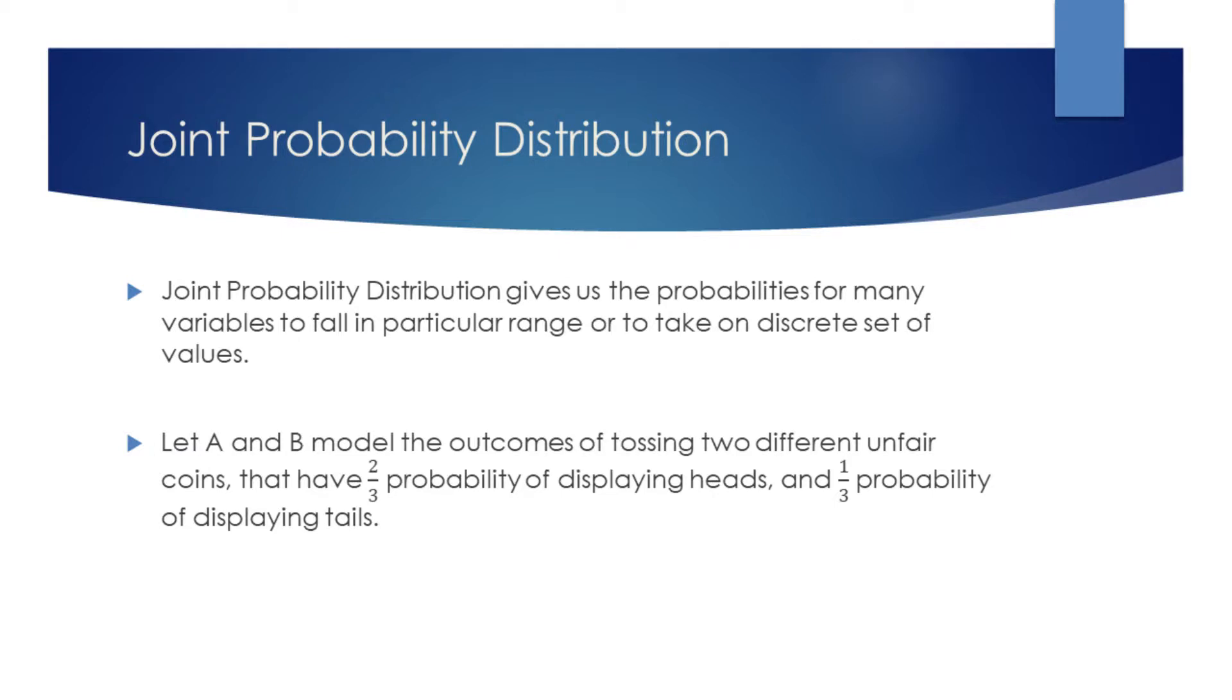To illustrate this concept better, we will try to find the joint probability distribution for two discrete random variables. Let A and B model the tosses of two different unfair coins that have two-thirds probability of displaying heads and one-third probability of displaying tails.